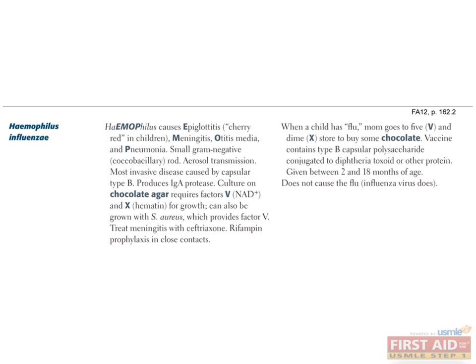Haemophilus influenzae is a gram-negative coccoid rod which used to be a major cause of severe childhood respiratory disease. However, thanks to successful vaccination programs against the highly virulent encapsulated H. influenzae serotype B (HIB), H. influenzae is no longer a leading cause for diseases such as epiglottitis and meningitis. Today, H. influenzae disease is mainly caused by serotypes C, F, and non-typable strains that contribute to normal nasopharyngeal bacterial flora and cause localized diseases such as otitis media, pneumonia, and sinusitis. Recall that Strep pneumoniae is currently the leading cause of otitis media.